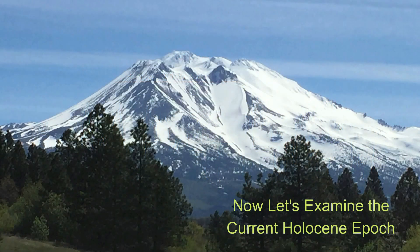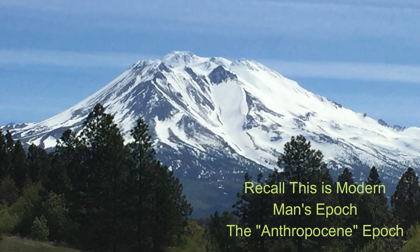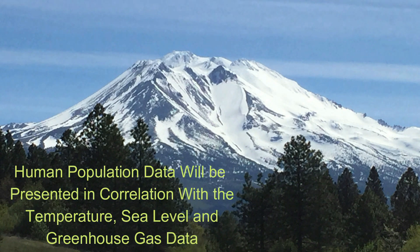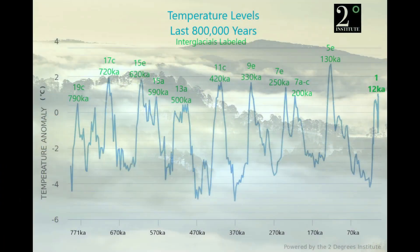Now let's examine the current Holocene epoch. Recall this is modern man's epoch — the Anthropocene epoch. Human population data will be presented in correlation with the temperature, sea level, and greenhouse gas data. Here are those temperature levels again with the interglacials labeled. We are number one. And remember, 5e was the Eemian — an extremely warm interglacial — just prior to ours.